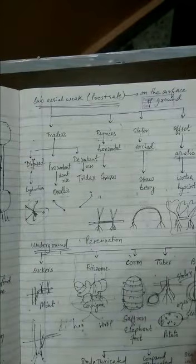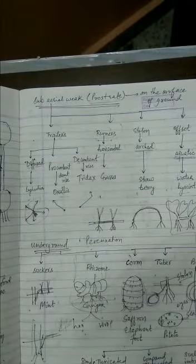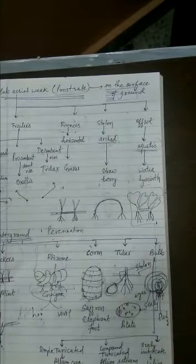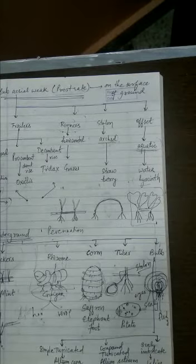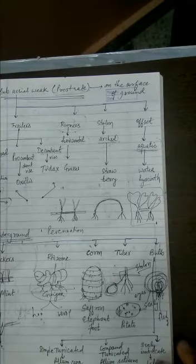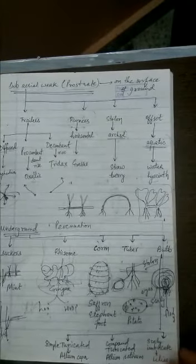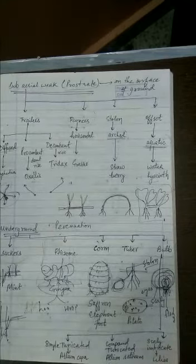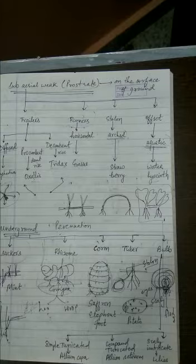We will be learning about this in inflorescence topic. So bulbs are of various types. The first type is called as a simple tunicated bulb. Now we all know about onion. Onion is an example, scientific name Allium cepa. It is an example of simple tunicated bulb. And the garlic is an example of compound tunicated bulb. Allium sativum. So learn the scientific names.